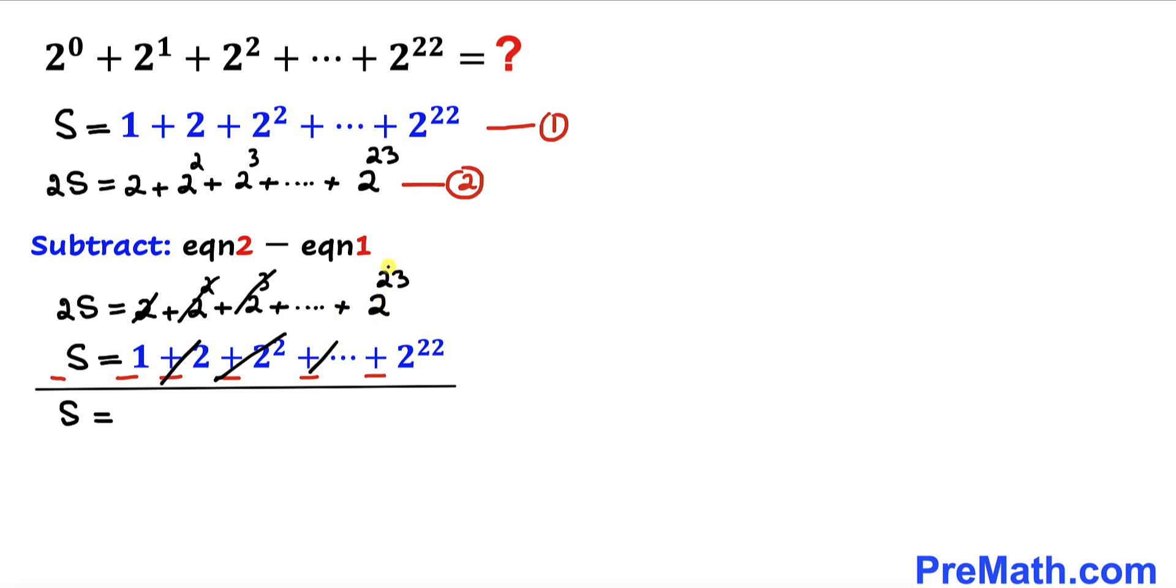And we know the term before this 2^23 is 2^22, so this cancels out with this one. Therefore we are just ended up with 2^23 minus this 1. Therefore S turns out to be equal to 2^23 - 1.